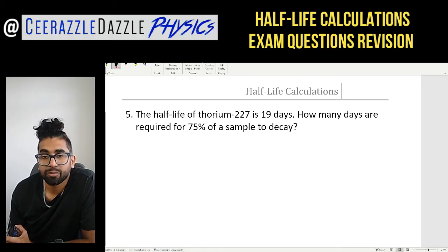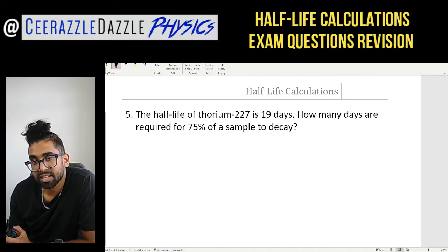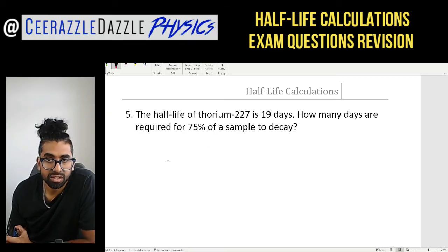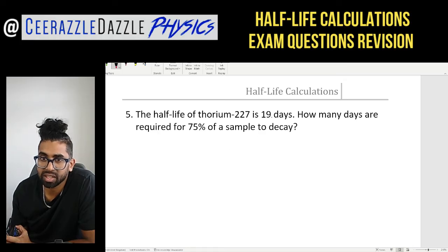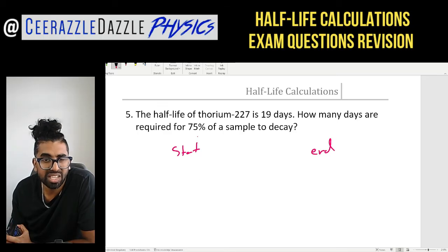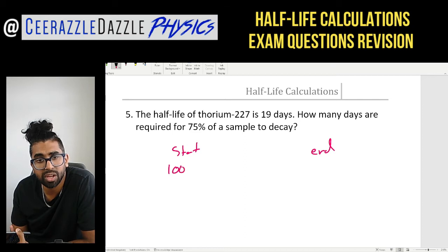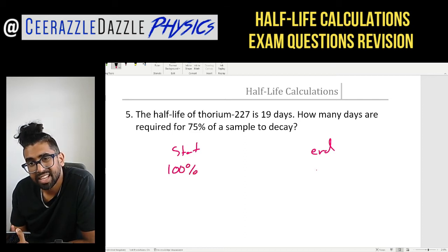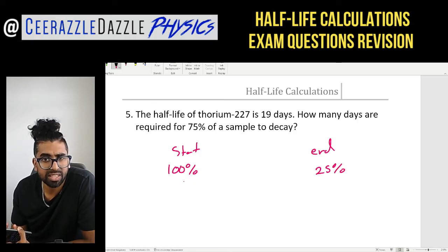Question five: the half-life of thorium-227 is 19 days. How many days are required for 75% of a sample to decay? We have the start and the end. If 75% decays, only 25% remains. So starting at 100%, we need to reach 25%.